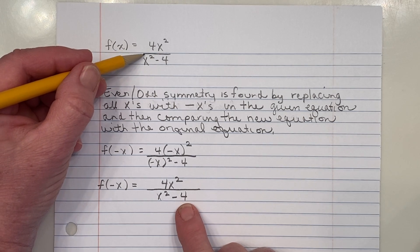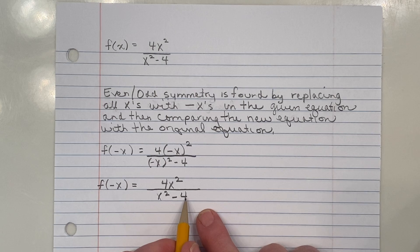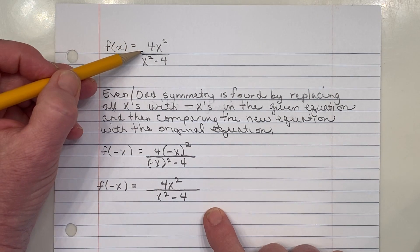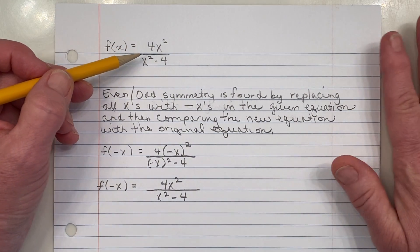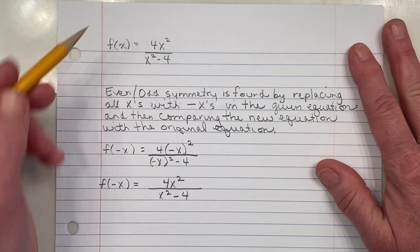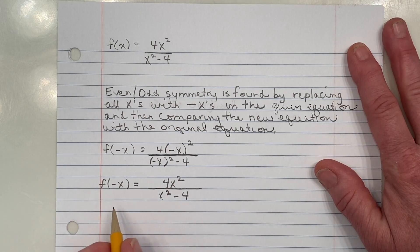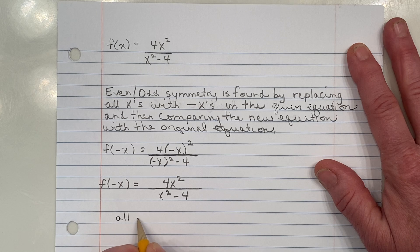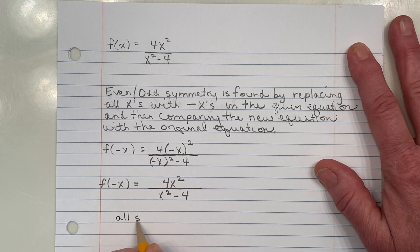So now I compare this answer with the original answer. And for even symmetry, if the new equation is exactly like the original equation, then that tells us that we have y-axis symmetry, which means we have an even function.